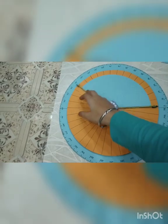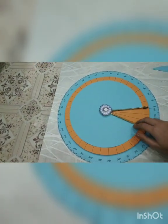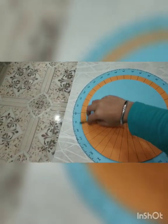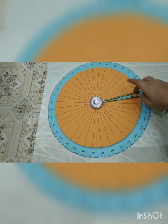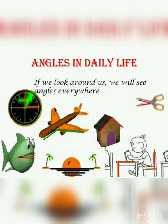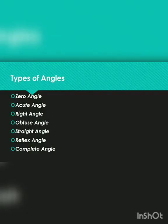This is an instrument created to measure the various measurements of angles. Angles are everywhere. If we look around us we will see angles everywhere. Here are a few types of angles: zero angle, acute angle, right angle, obtuse angle, straight angle, reflex angle, and complete angle.